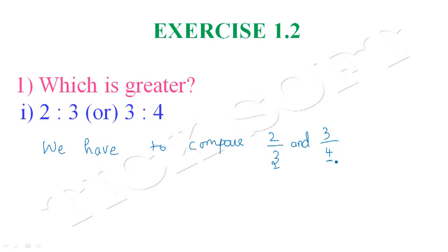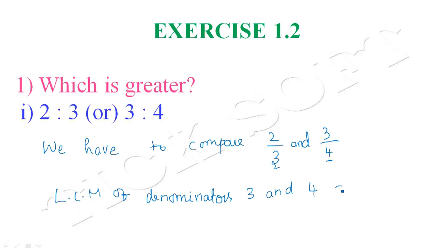So how can we make these two denominators equal? For that, first we have to find out the LCM. The LCM of denominators 3 and 4: since there is no common factor for these two terms, their product is the required LCM. So 3 into 4 is 12. Hence we get the LCM of the denominators as 12, so we have to make both denominators equal to 12.